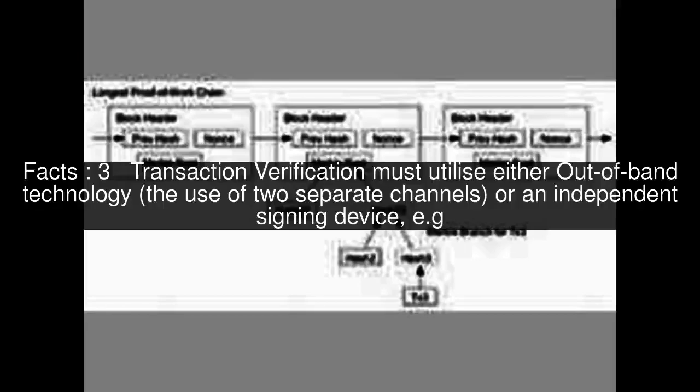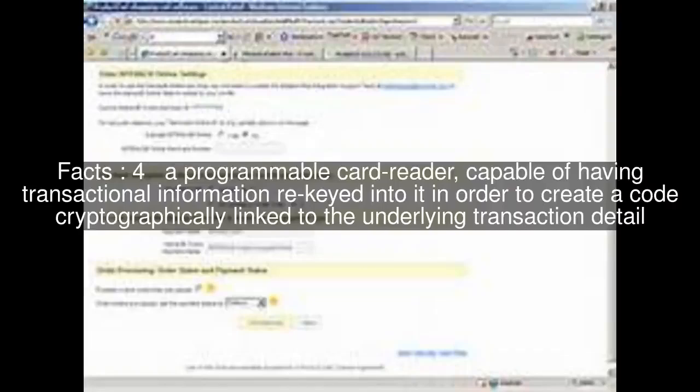Transaction verification must utilize either out-of-band technology — the use of two separate channels — or an independent signing device. A programmable card reader is capable of having transactional information re-keyed into it in order to create a code cryptographically linked to the underlying transaction detail.